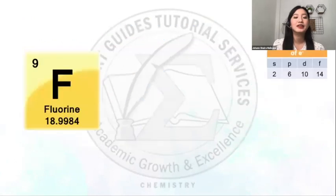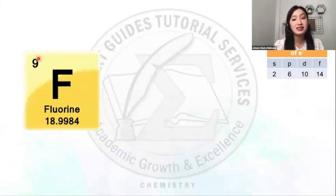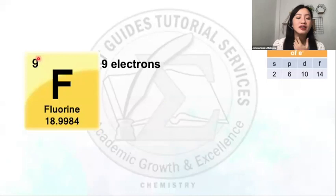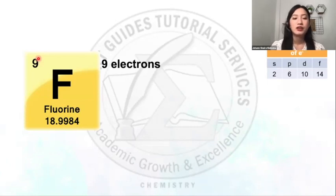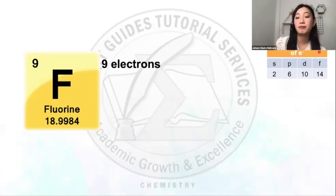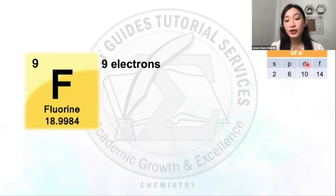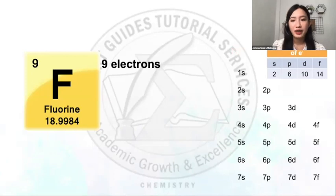Let's have an example — fluorine. Knowing that the atomic number of fluorine is 9, and since the atomic number equals the number of protons and electrons, fluorine has a total of 9 electrons. Remember: S sub-level maximum is 2, P maximum is 6, D maximum is 10, and F maximum is 14. I'll write the electron configuration guided by the diagonal rule.